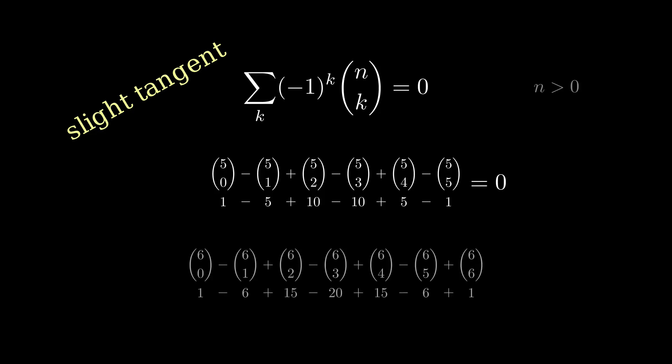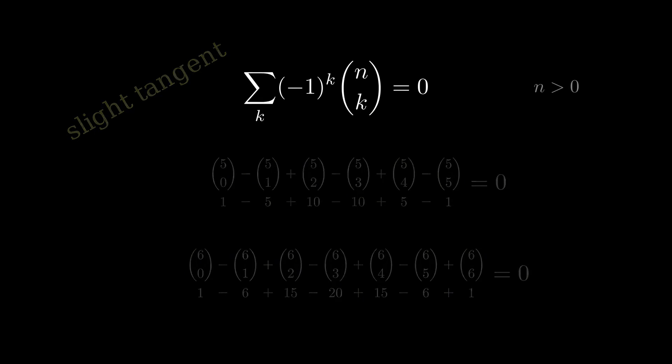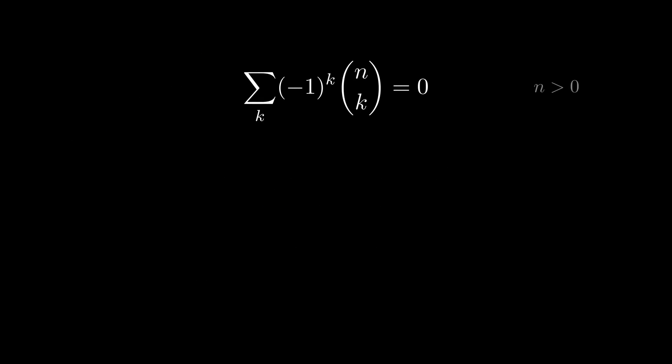Maybe the first thing you think when trying to prove this is, well, that's at least obvious for odd n since n choose k is n choose n minus k, so odd rows of Pascal's triangle have paired up entries with opposite signs, such as in row 5 where we get a plus 1 and a minus 1, a minus 5 and a plus 5, and a plus 10 and a minus 10, whose sum is naturally zero. If you proceed that way with even rows, the terms don't match up, but they do still sum to zero.